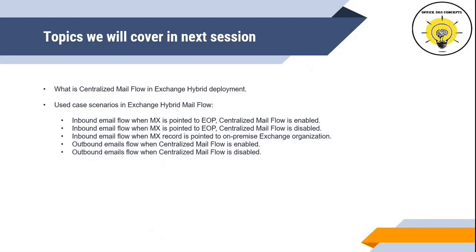In the next video, I will be discussing what is centralized mail flow in Exchange Hybrid Deployment. I will be discussing five use case scenarios of Exchange Hybrid mail flow: the first where MX record is pointing to EOP and centralized mail flow is enabled; the second where MX record points to EOP and centralized mail flow is disabled; the third where MX record is pointing to on-premise; the fourth covering how outbound emails are routed to the internet when centralized mail flow is enabled; and the fifth covering outbound email flow when centralized mail flow is disabled.